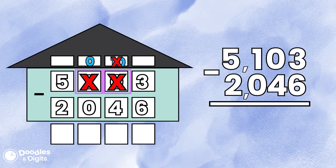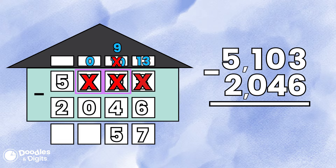We're still not finished because our ultimate goal is we need to borrow to get to the ones place. We have to borrow one from the ten, so that makes it a nine, and we'll add that ten into the ones place. So ten plus three equals thirteen. Now we can subtract: thirteen minus six is seven, nine minus four is five, zero minus zero is zero, and five minus two is three.